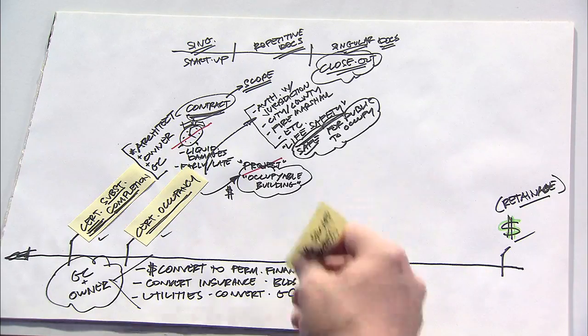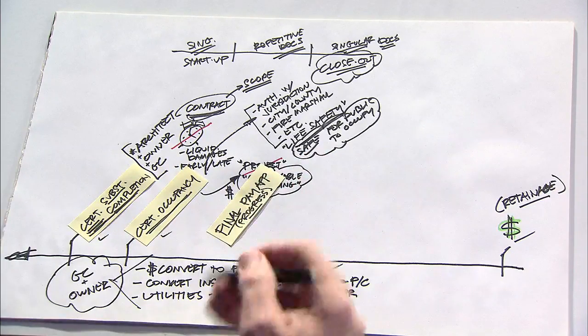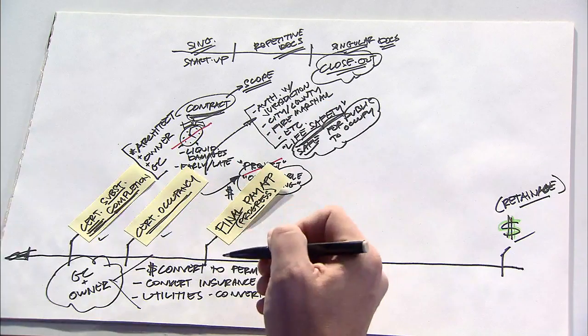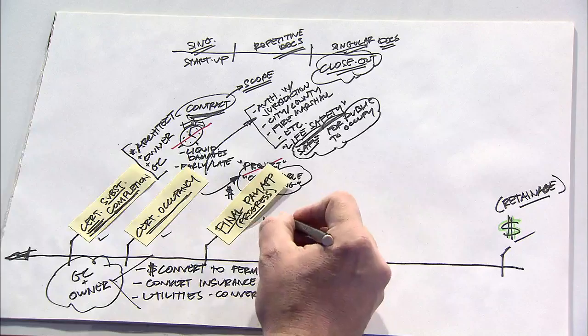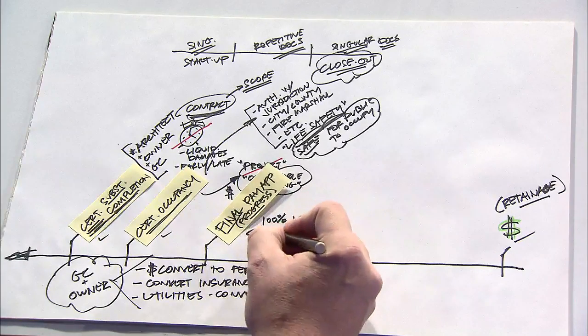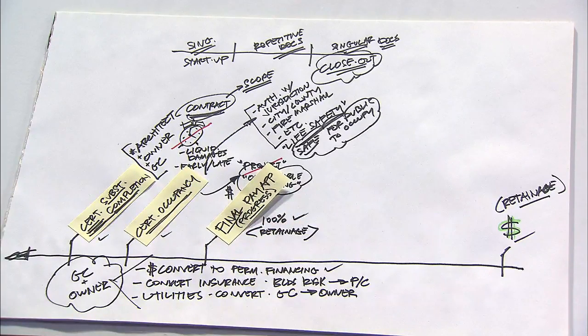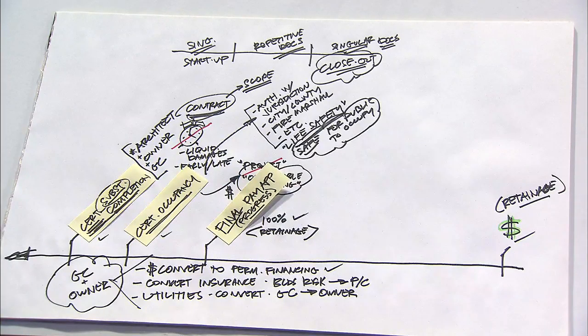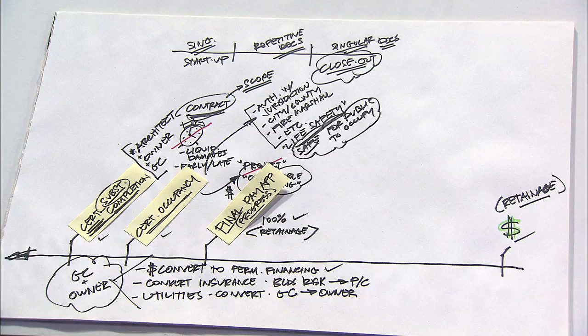Once the Certificate of Substantial Completion is issued, then typically the contractor would be able to bill for the last progress payment. This would be a payment defined as 100% of the project, but still minus the retainage. What this suggests is that everything on the project has been substantially completed, but there remain a few things to do.